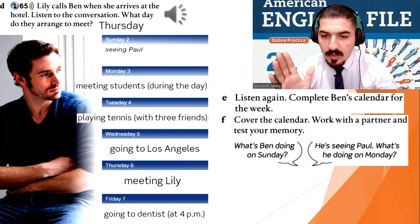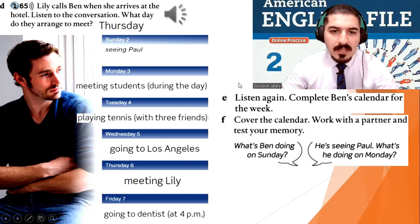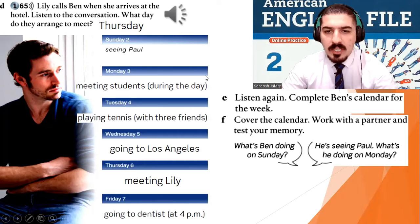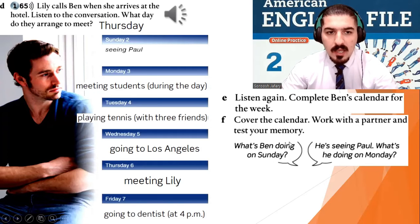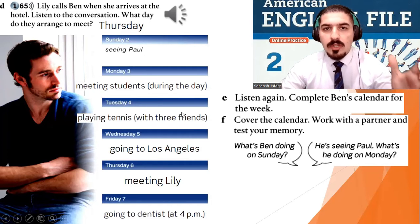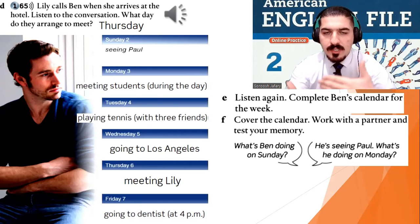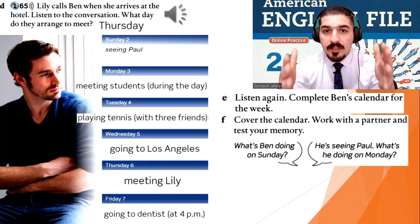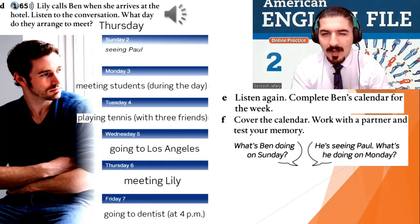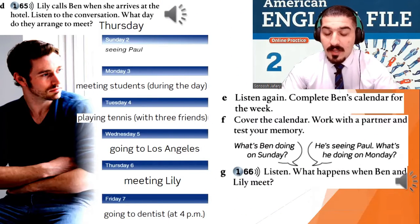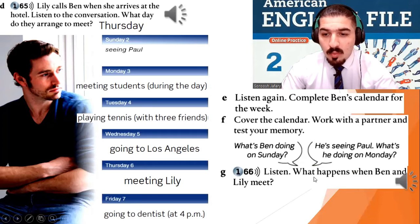I need you to ask questions about Ben's plans and arrangements. For example: what's Ben doing on Sunday? He's seeing Paul. What's he doing on Monday? He's meeting students. Do it with your partner — ask about Ben's arrangements, his schedule, what he does during the week. Now, this is the end of this story — listen to what happens when Ben and Lily meet.